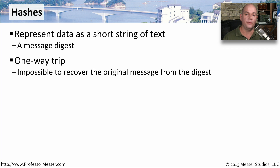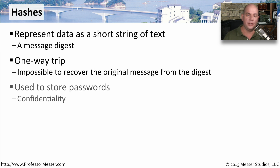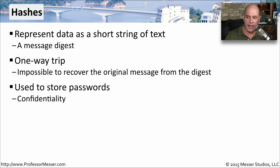This is a one-way trip. If we create a hash from a group of information, we're not able to undo that hash and somehow retrieve the original information. This is perfect for storing passwords. We can take a piece of information like a password, hash it, and there would be no way to determine what the original password was once we created the hash.